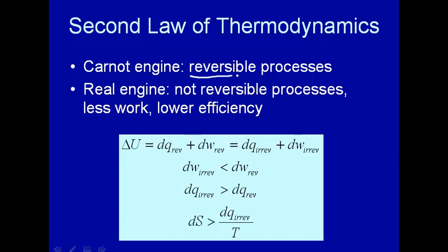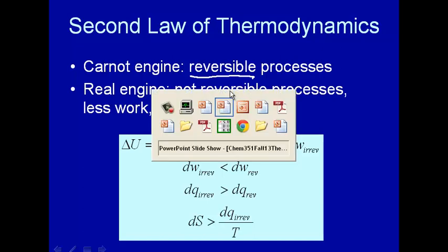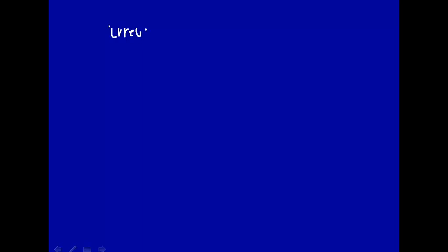Now we're going to make the distinction that the Carnot engine, and how we defined entropy, was for reversible processes. But if you look at real engines, they're not reversible. To go through some cycle, it takes some finite time for a real engine — it would have to take an infinite time for a reversible engine. So irreversible processes correspond to real processes, things, engines, and cycles you can go through in everyday life.